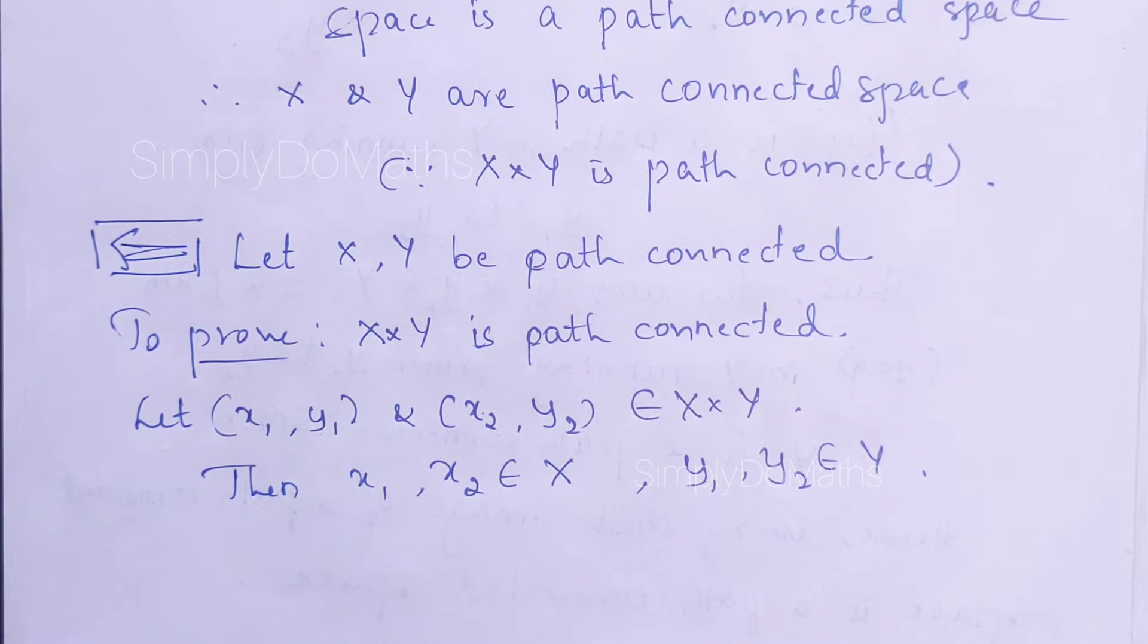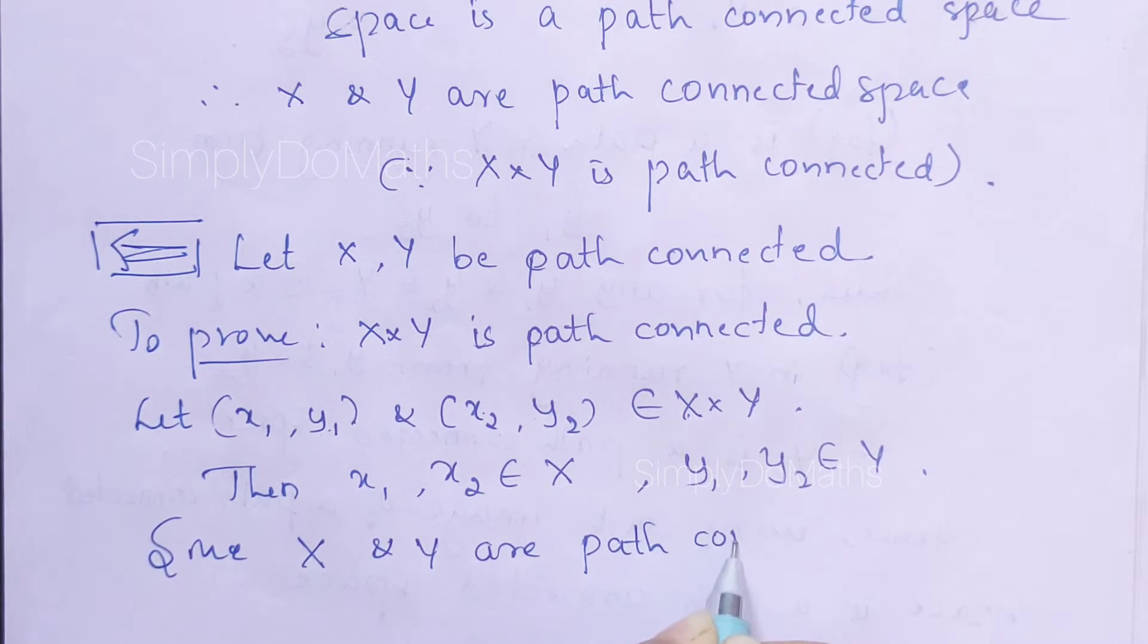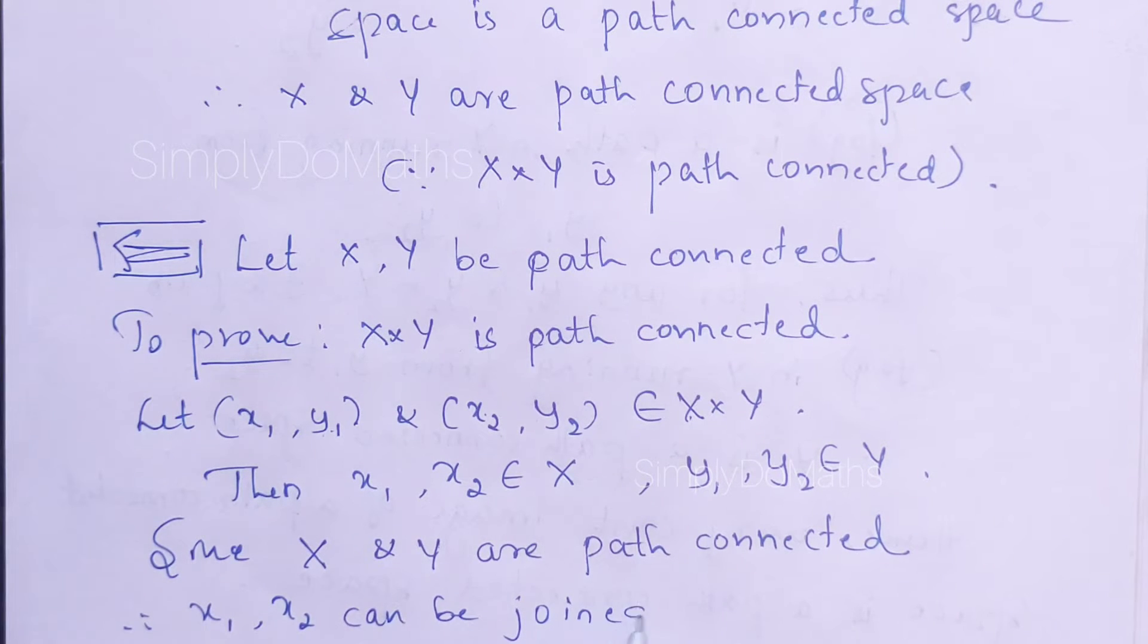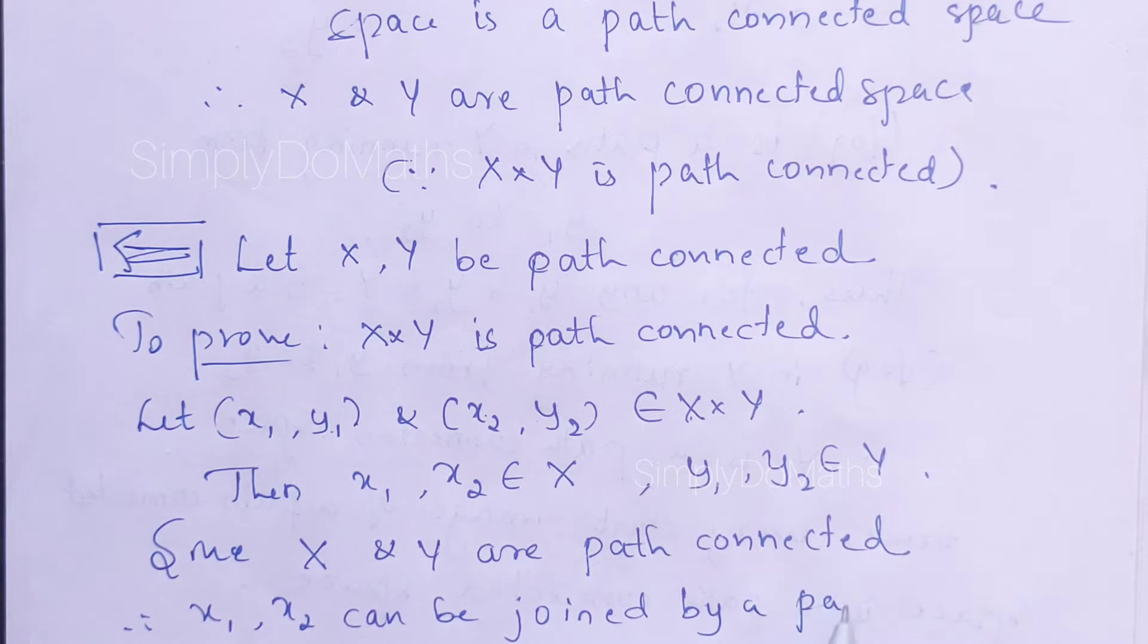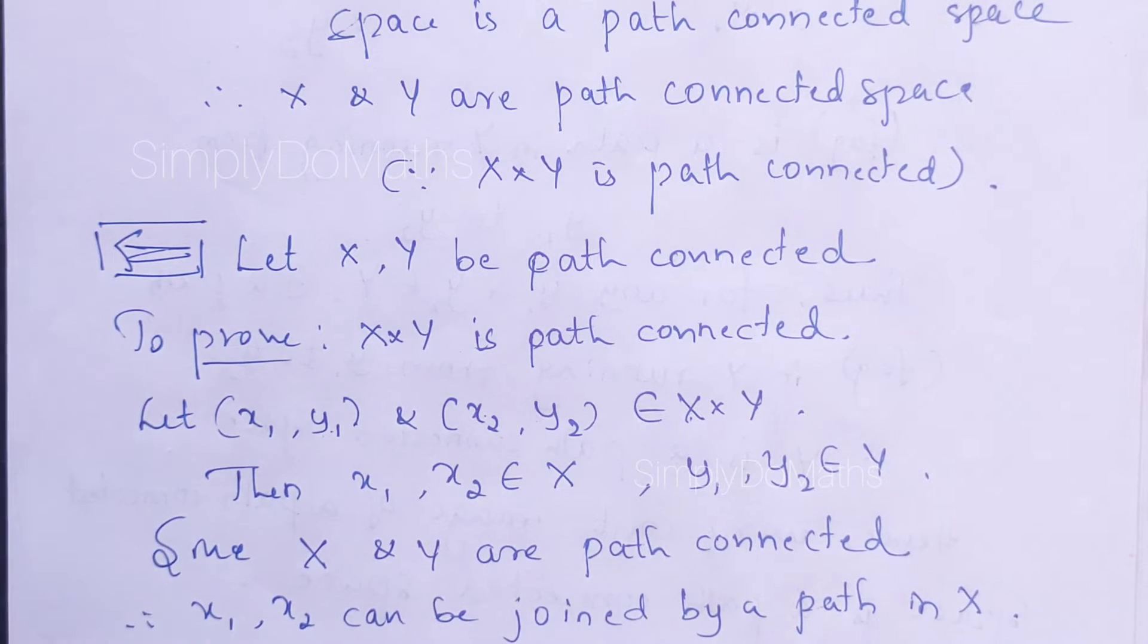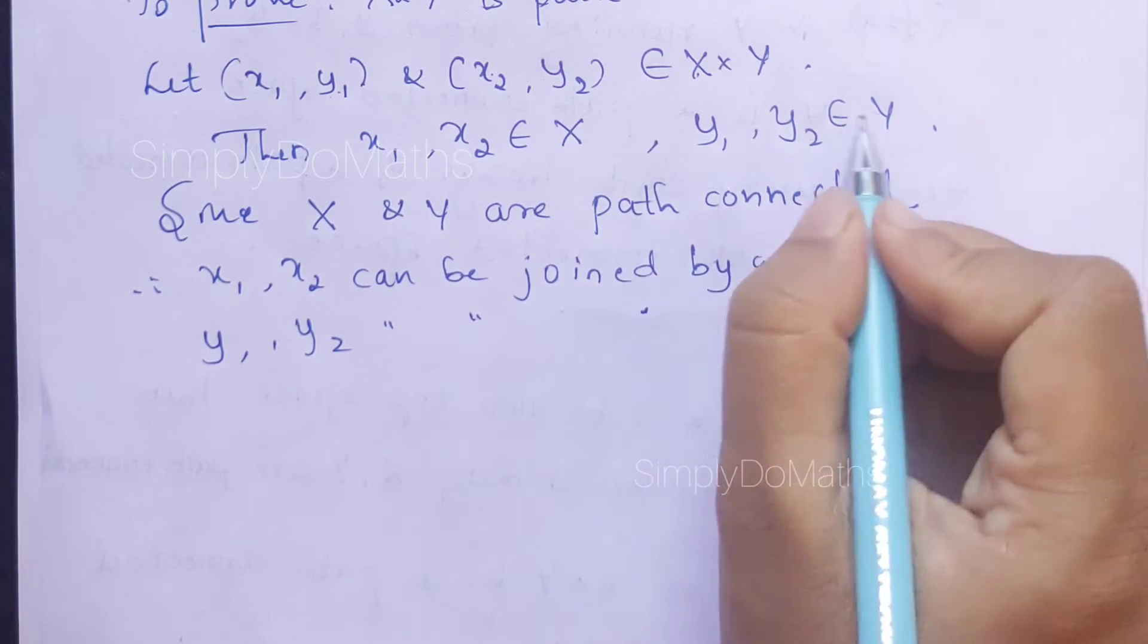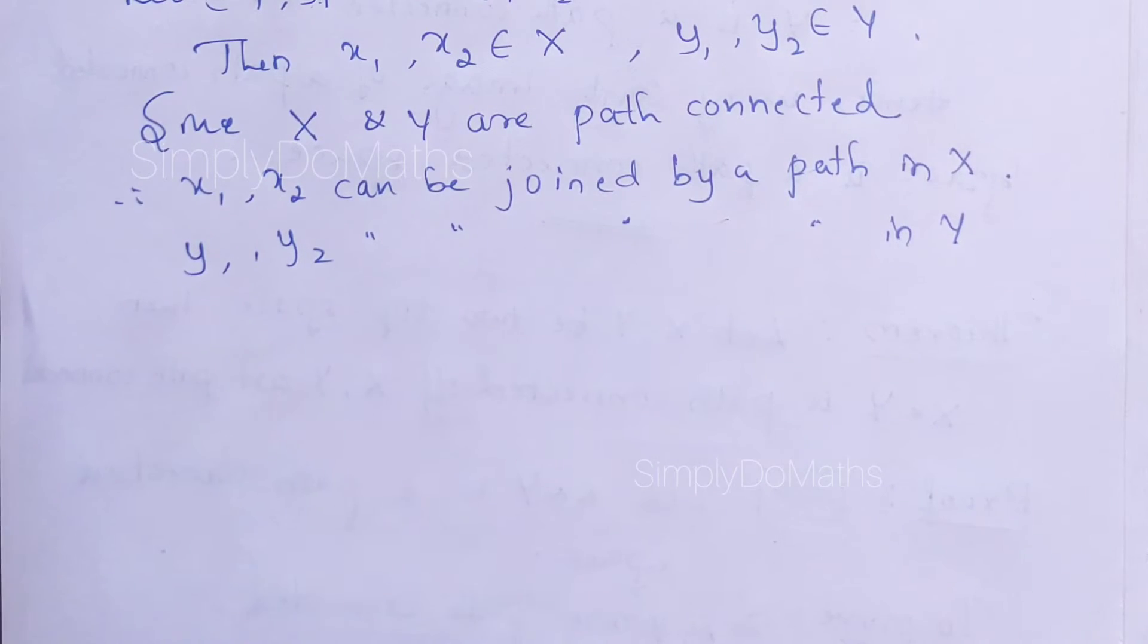x₁, x₂, y₁, y₂—because these are the ordinates of X×Y. So x₁ and x₂ belong to capital X, and y₁ and y₂ belong to capital Y. Since here the hypothesis is X and Y are individually path-connected, therefore x₁ and x₂ can be joined by a path in capital X. Similarly, y₁ and y₂ can be joined by a path in capital Y, because X and Y both are path-connected spaces.